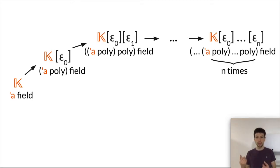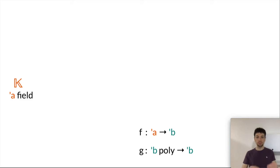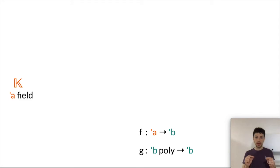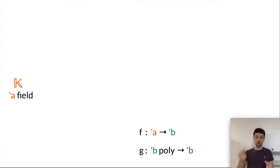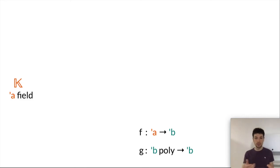Now I'm going to show you the proof that we formalized in Isabelle, and therefore show you the solution we found for this limitation. The idea is to come up with a type B and two functions f and g, where f has type A → B and g has type B poly → B. The type B we come up with in the development is the type of multivariate polynomials where the variables are indexed by polynomials with A coefficients. We are interested in the high-level structure of the proof.